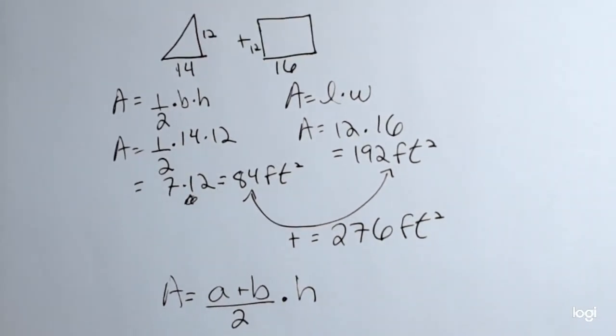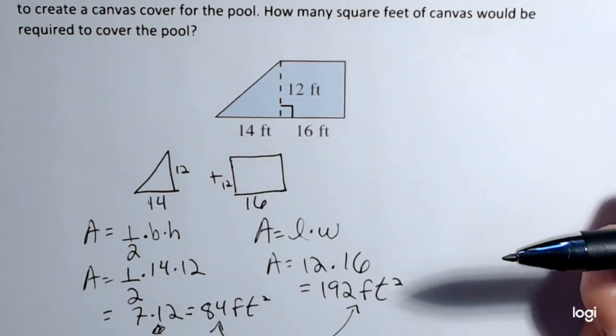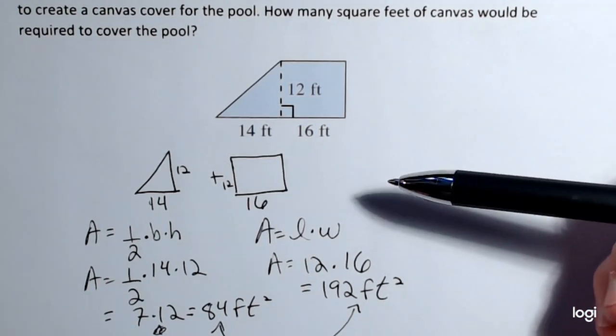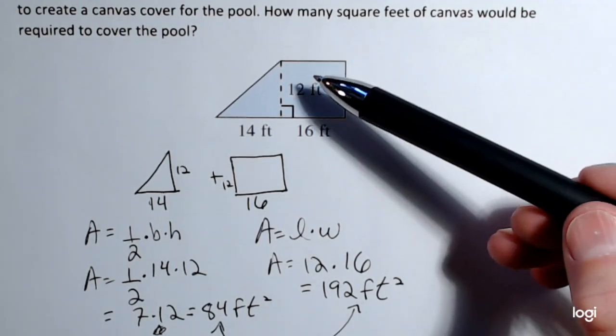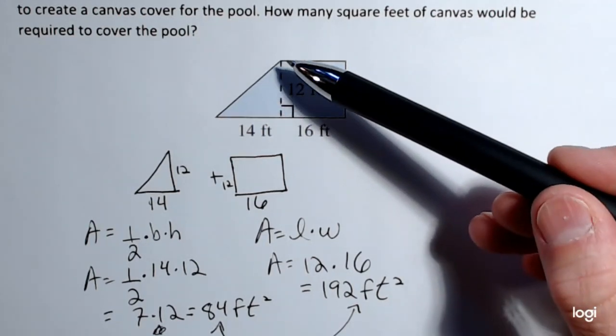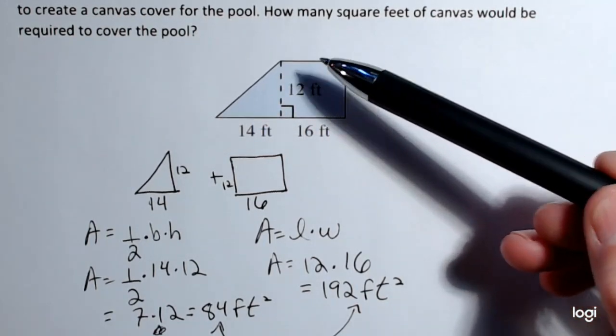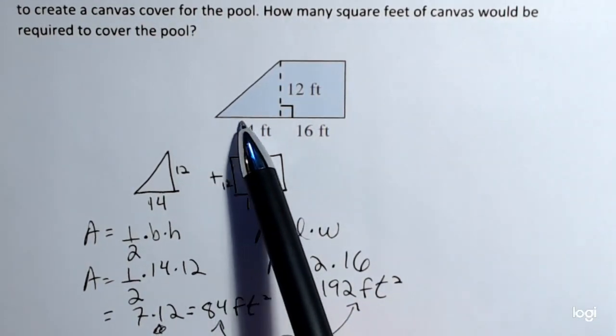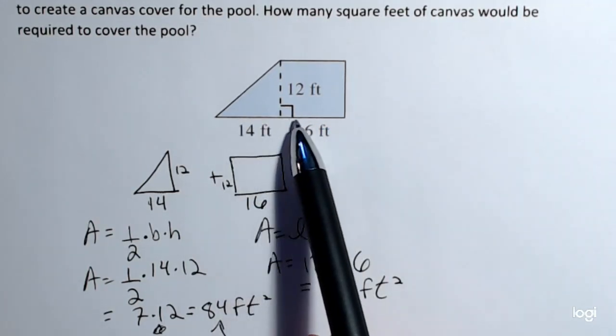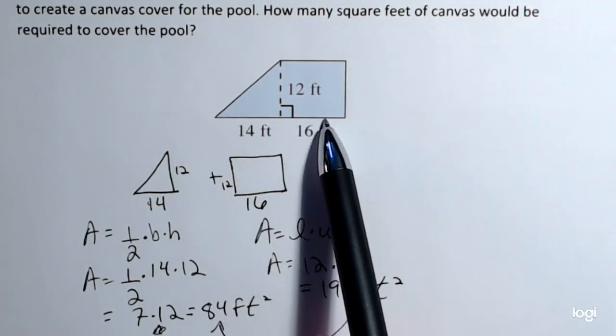So we need to figure out what the two bases are. The bases for a trapezoid are the parallel lines. So I know from this figure that this base is 16. Now this parallel line, or this line here, isn't just 16 feet, it's 30 feet.